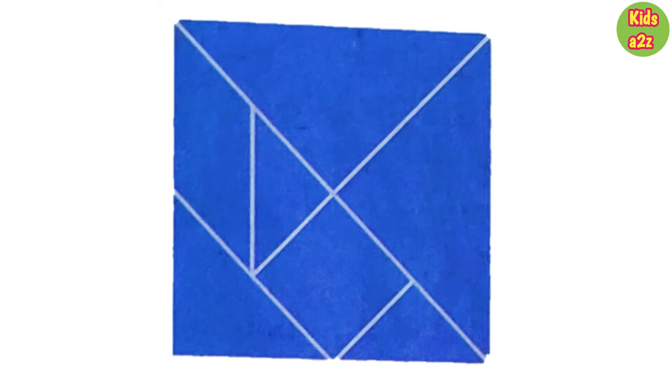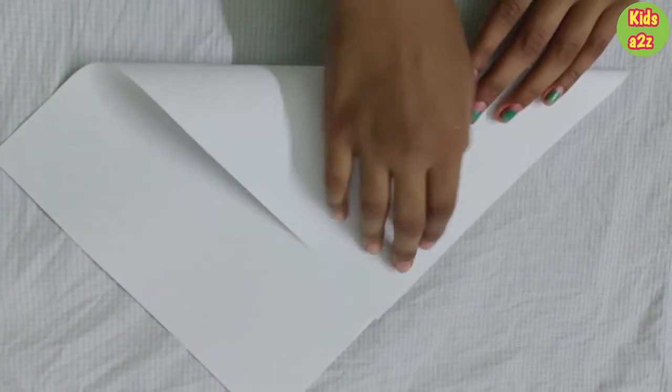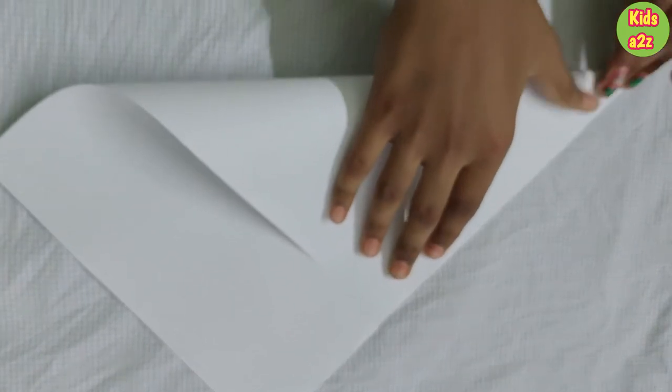This is a picture of a 7 piece tangram. Let's make it. First, we will need a square paper. Let's make it.